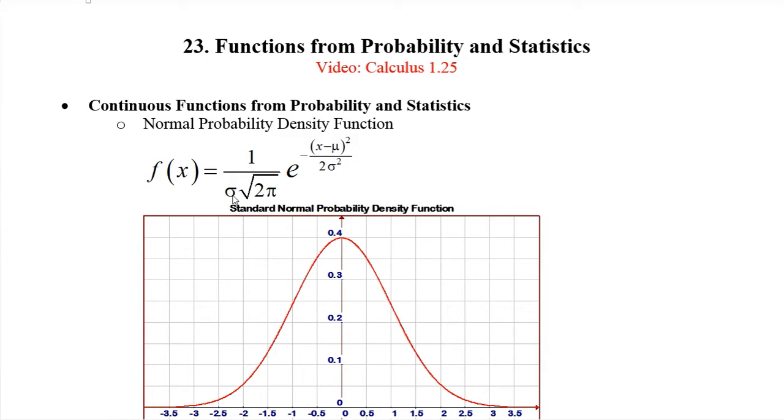The standard one is when you let sigma be one, so this kind of disappears because that's one, and you can erase the mu because it's zero. If you take mu is zero and sigma is one in this formula, you get the graph that we have here.